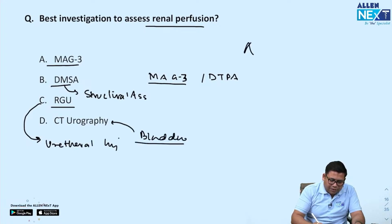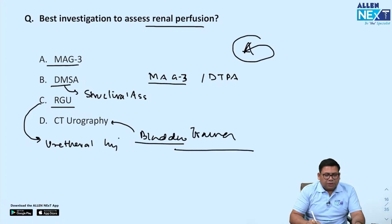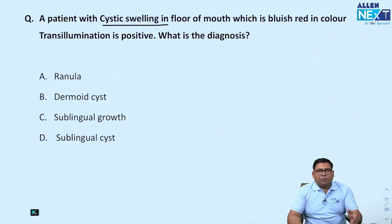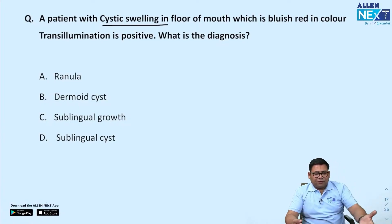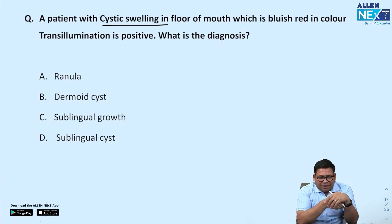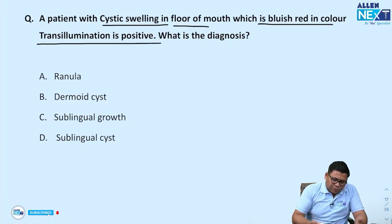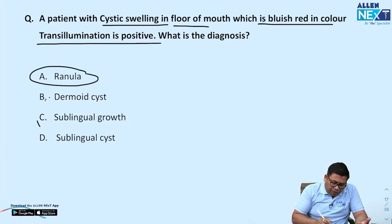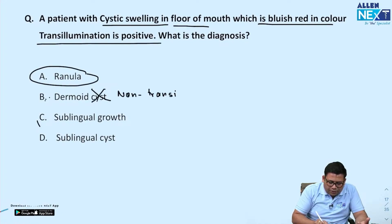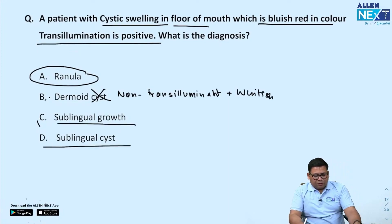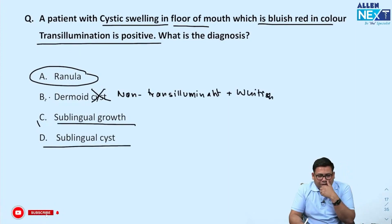The answer for bladder trauma is CT urography. Next: a patient with a cystic swelling on the floor of the mouth — bluish-red, transillumination positive. The answer is ranula. Remember, dermoid cyst is non-transilluminant and appears whitish, so it is not a sublingual cyst in this case.